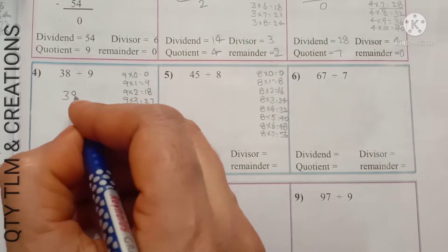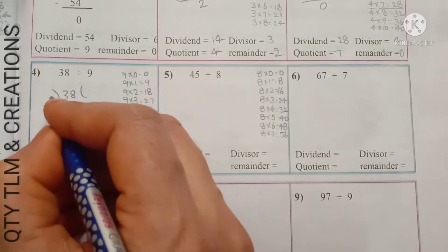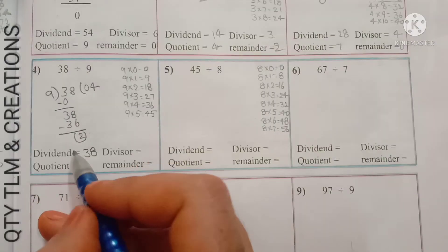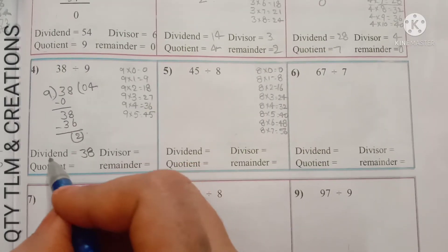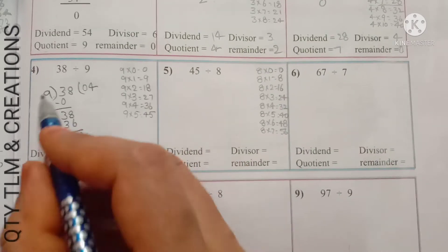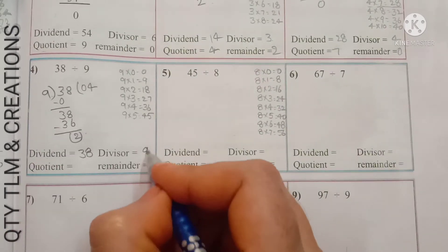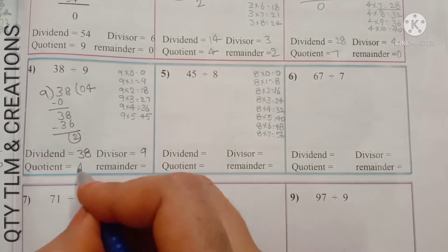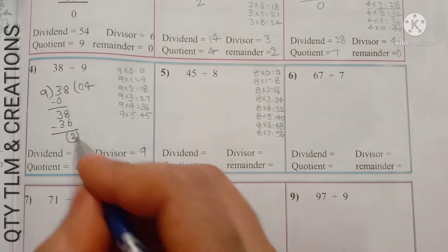Next, question 4: 38 divided by 9. After division, dividend is 38, divisor is 9, quotient is 4, remainder is 2.